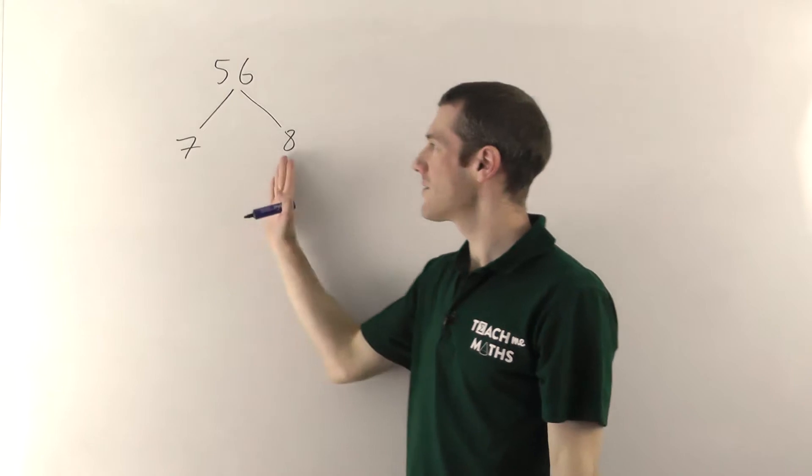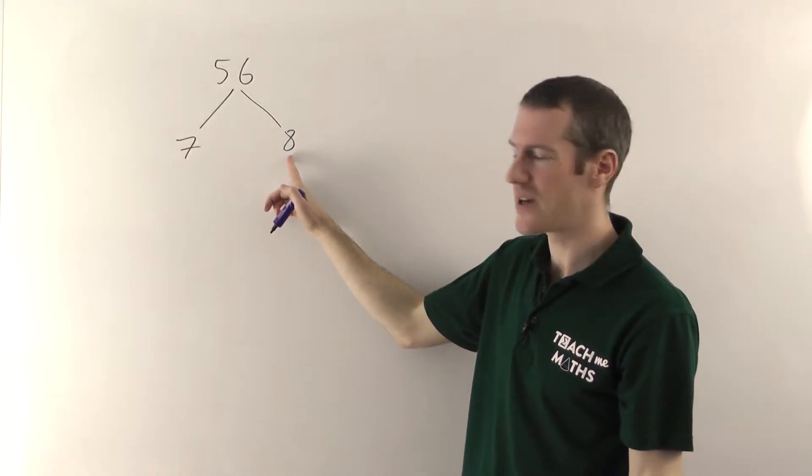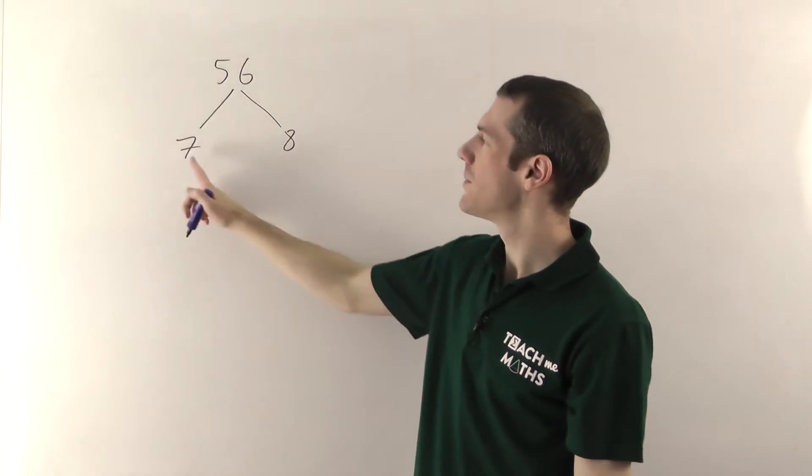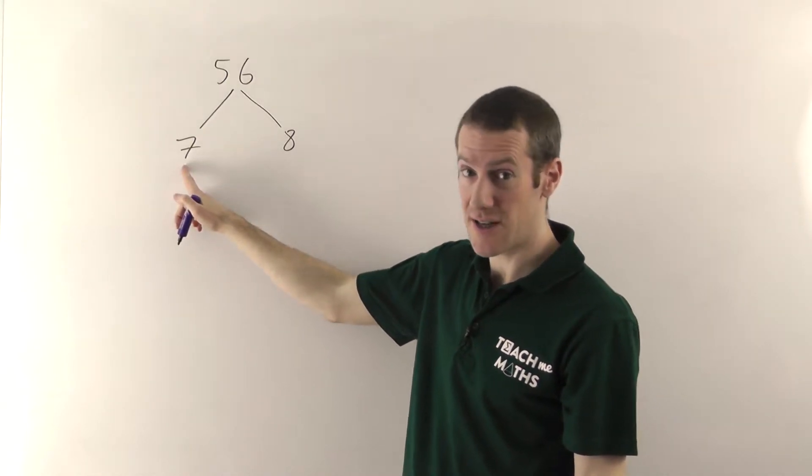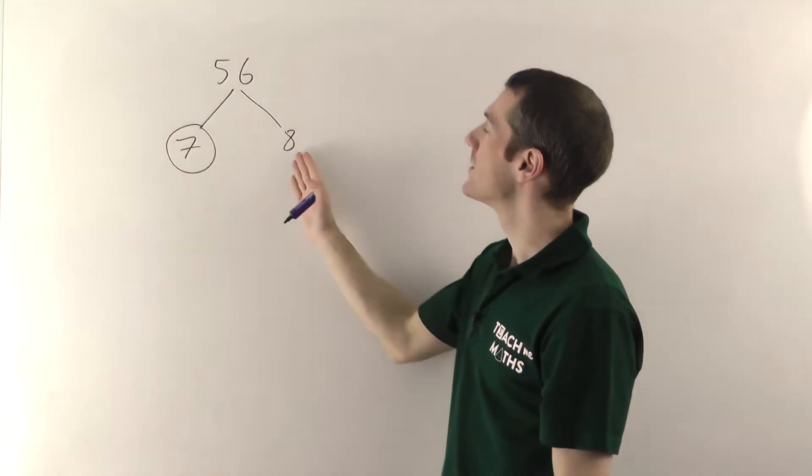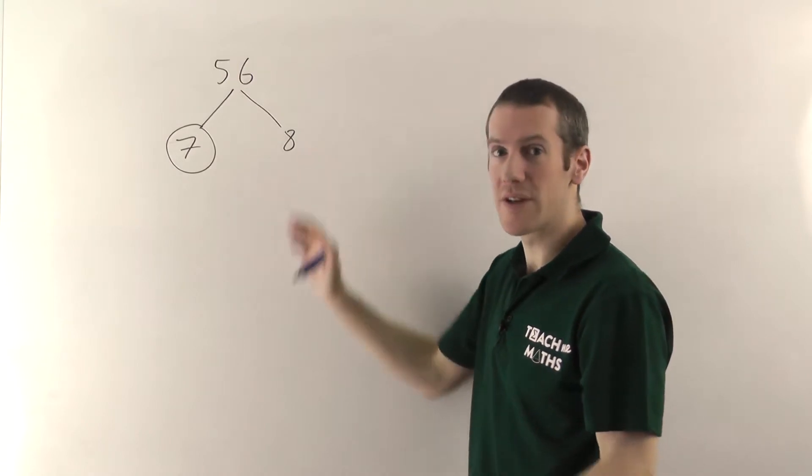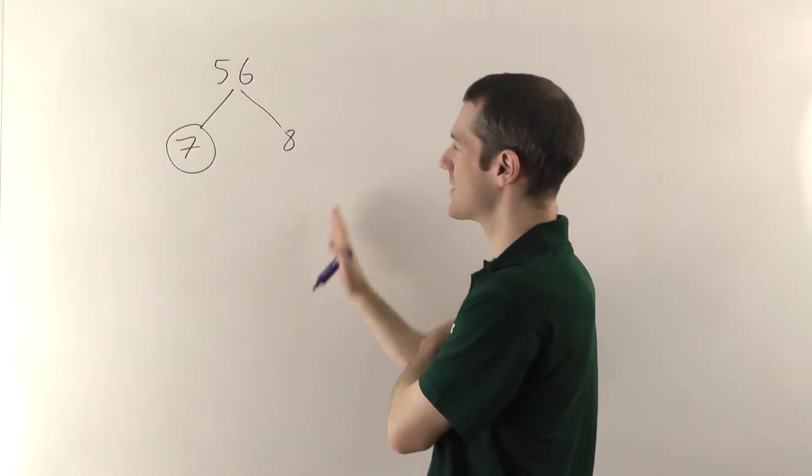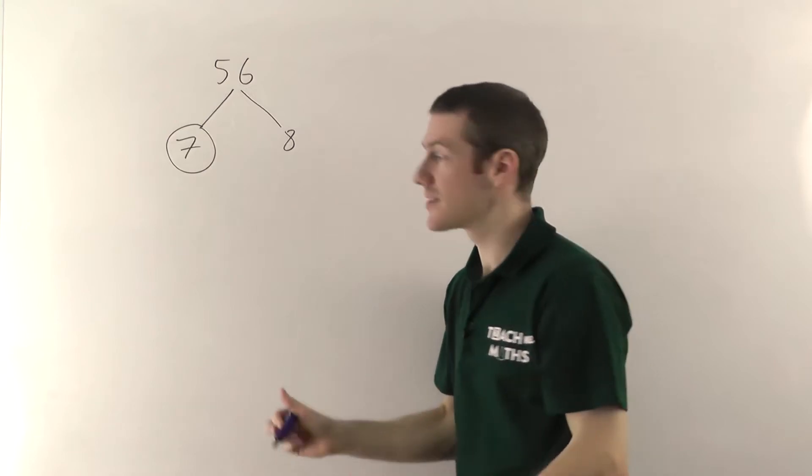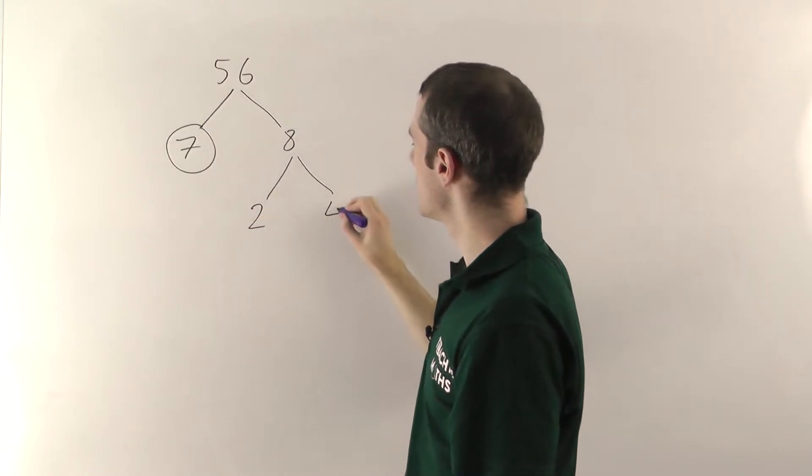Then you ask yourself are either of these numbers prime numbers? Well 8's even. It's divisible by 2 so that's not a prime number. But 7 nothing else goes into 7. So 7 is a prime number and you want to stick a circle around any of the prime numbers. Then you look at 8 and ask yourself again what times what would give me 8. I want to split this up into two things again. Well 2 times 4 is 8 so I can split this into 2 times 4.